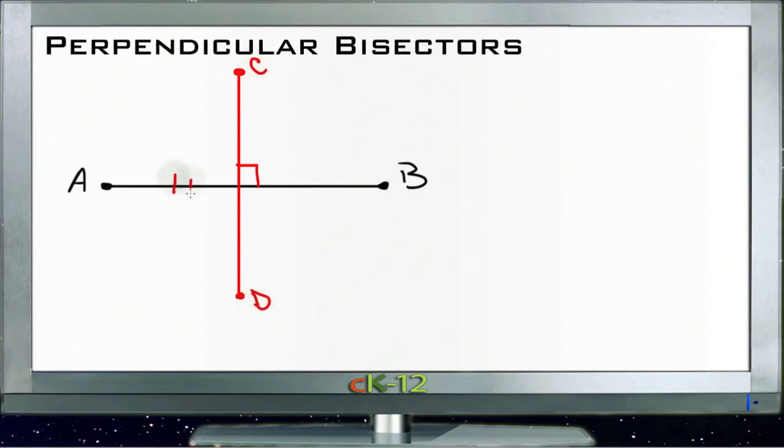So this line CD splits A B in half. It bisects it and it meets it at a 90 degree angle. That makes CD a perpendicular bisector of A B.